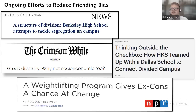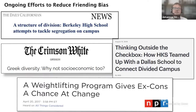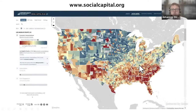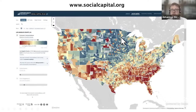We identify these factors in a correlational sense as related to the amount of friending bias across institutions. Our hope is that this work, joined by many other researchers, will help us understand why some institutions have more friending bias than others, and figure out what might be done to reduce it. To facilitate that, we've released all of this zip code, college, and high school level data on economic connectedness and all other social capital measures at socialcapital.org.